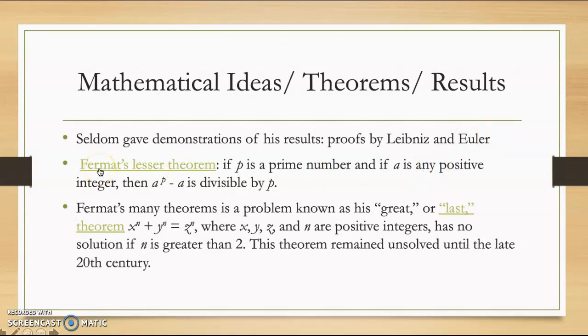And then Fermat's lesser theorem is that if p is a prime number and if a is any positive integer, then a to the p minus a is divisible by p.